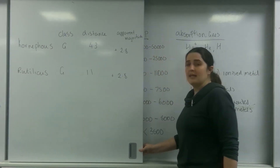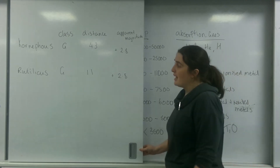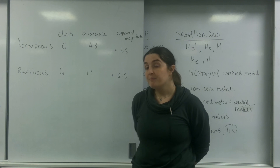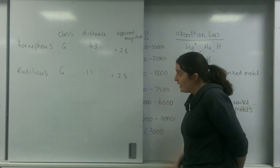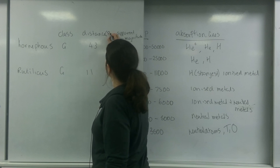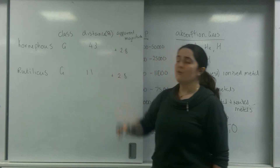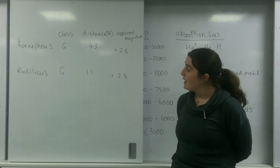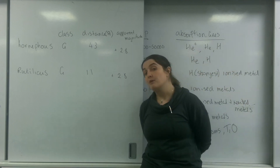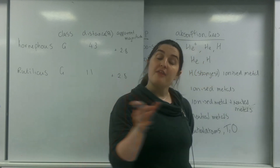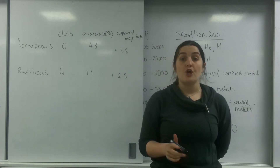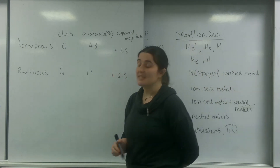I've got two stars here — Cornifos and Rutilicus — and they're both class G stars. Their distance away in parsecs: Cornifos is 43 parsecs away and Rutilicus is 11. Both have an apparent magnitude, which is the brightness as seen from Earth, and what I want to know is which one of these stars is bigger.